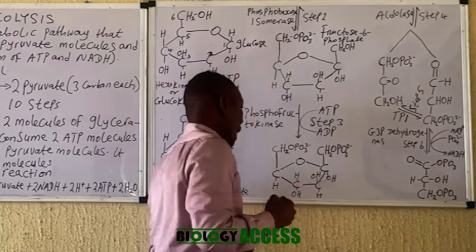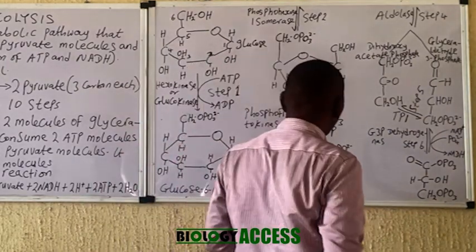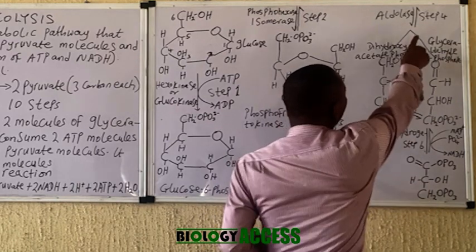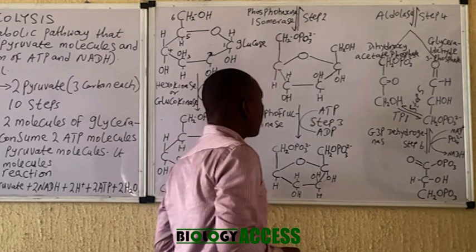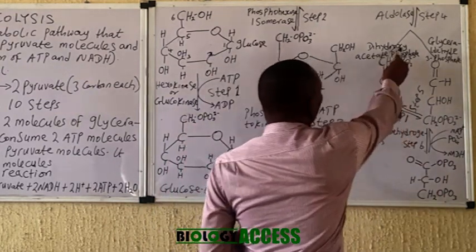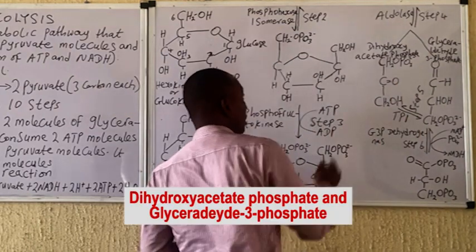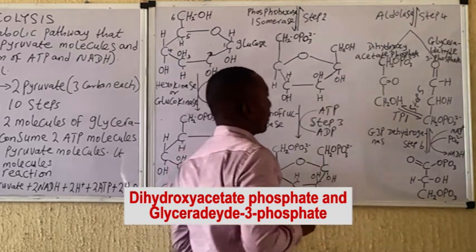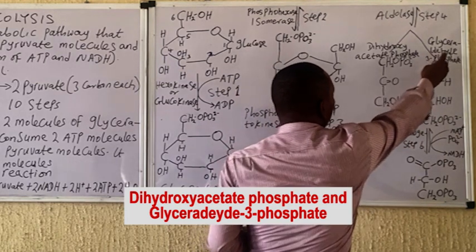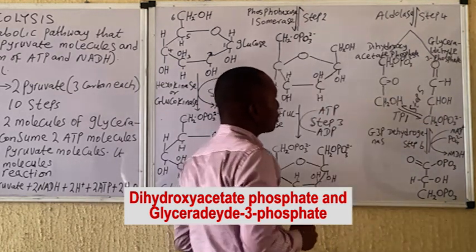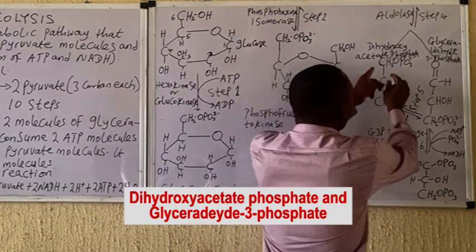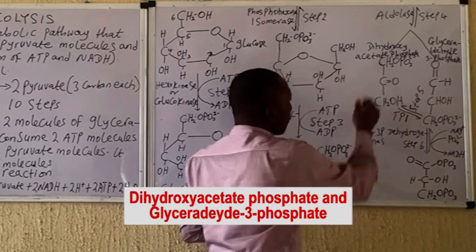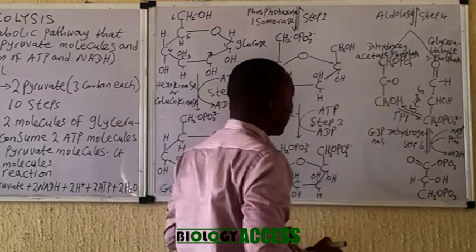In step four, fructose-1,6-bisphosphate is converted to two three-carbon compounds: dihydroxyacetone phosphate (DHAP) and glyceraldehyde-3-phosphate (G3P). Note that the six-carbon compound is split into two three-carbon compounds — adding them together still gives you six carbons. This reversible reaction is catalyzed by the enzyme aldolase.